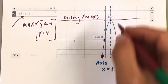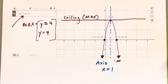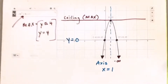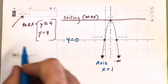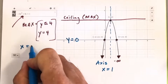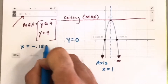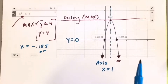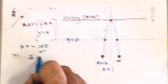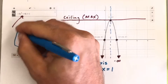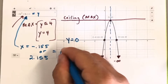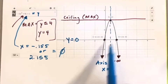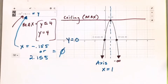We also have the idea of zeros — where the graph intersects the x-axis, meaning y equals zero. In this case, if you plug in approximately negative 0.155 or 2.155 into the equation, the result y would equal zero. Identifying zeros is an important part of analyzing a graph.